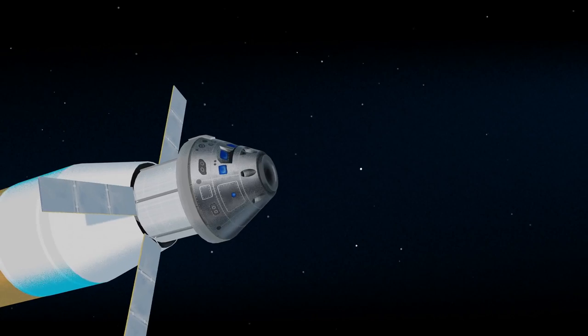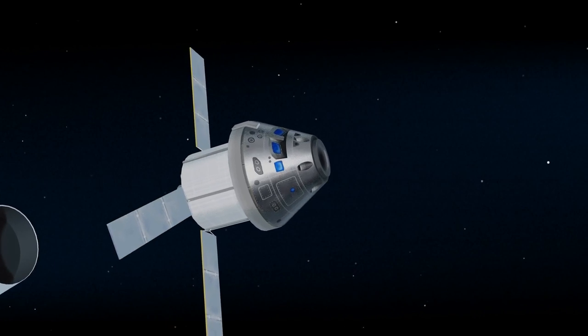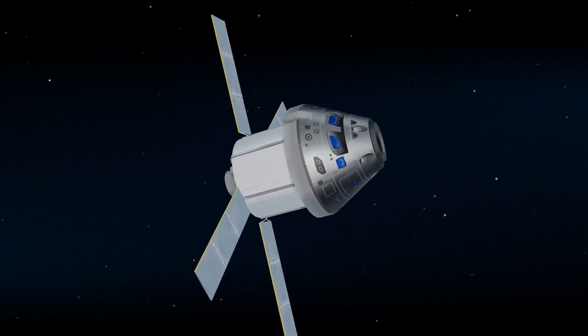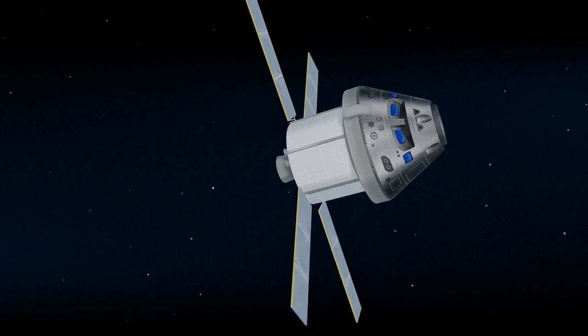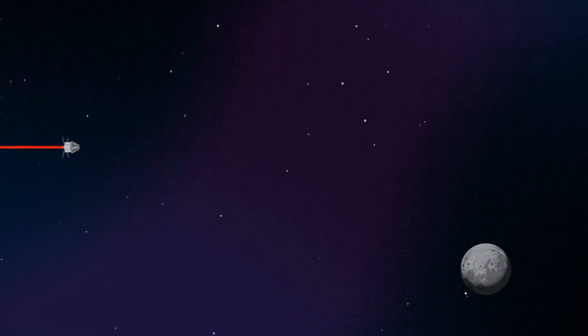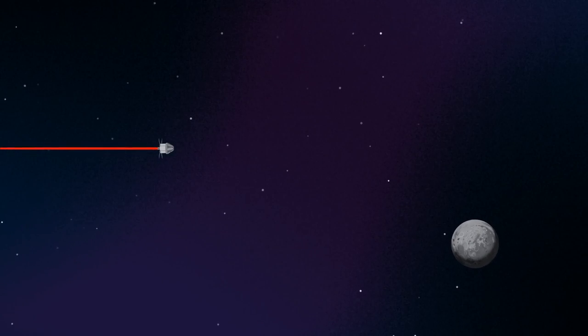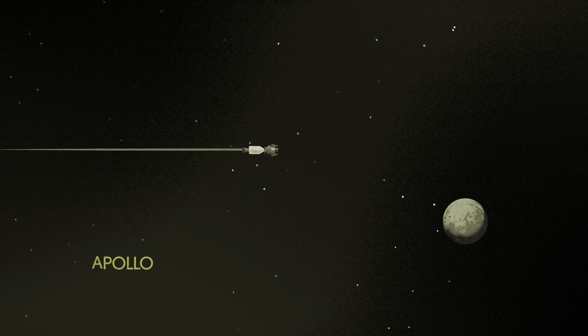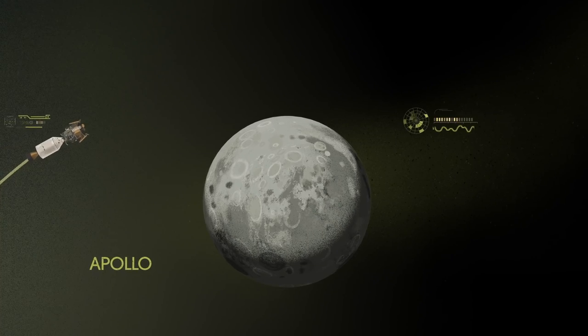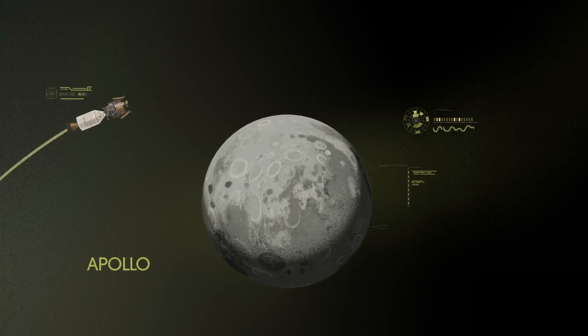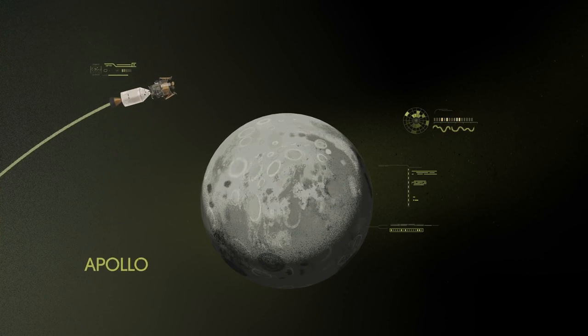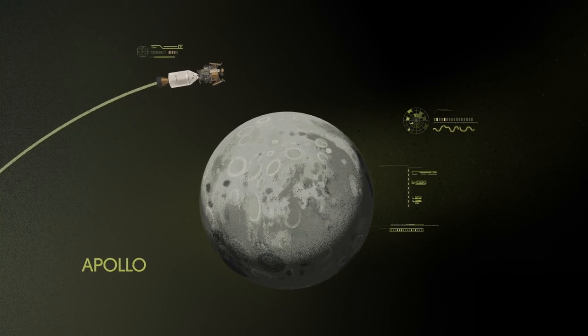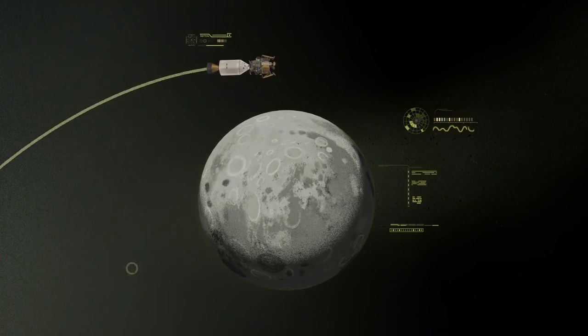Once this burn is complete, the upper stage of the SLS is jettisoned, and the crew aboard Orion coast for several days toward all that awaits them at the Moon. Approaching the Moon, we see the fundamental differences between Artemis and Apollo. Instead of requiring Orion to serve as an expendable lunar command module or to carry a constrained lunar lander, the Artemis missions will take advantage of a different approach: pre-staging.